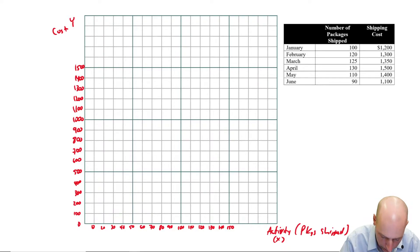So January 100, 1200. So 100, 1200 is all the way up here. I'm going to put a little dot there. 120, 1300. That goes there. 125, 1350. We're in between points, but that's fine. Right about there. I'm not far off. 130, 1500. It's getting a little bit awkward here. 110, 1400. And last 90 and 1100. There we go.